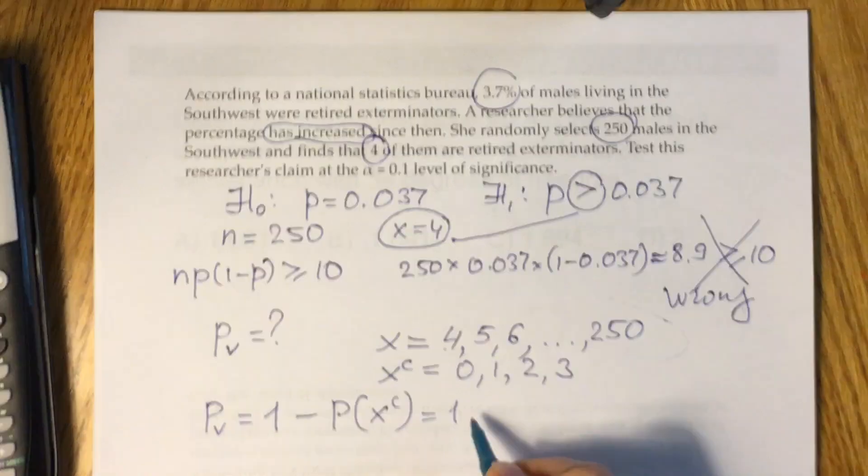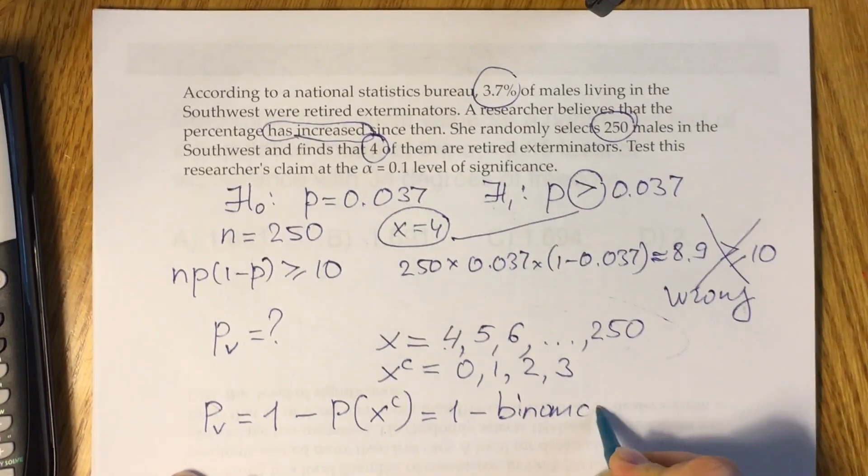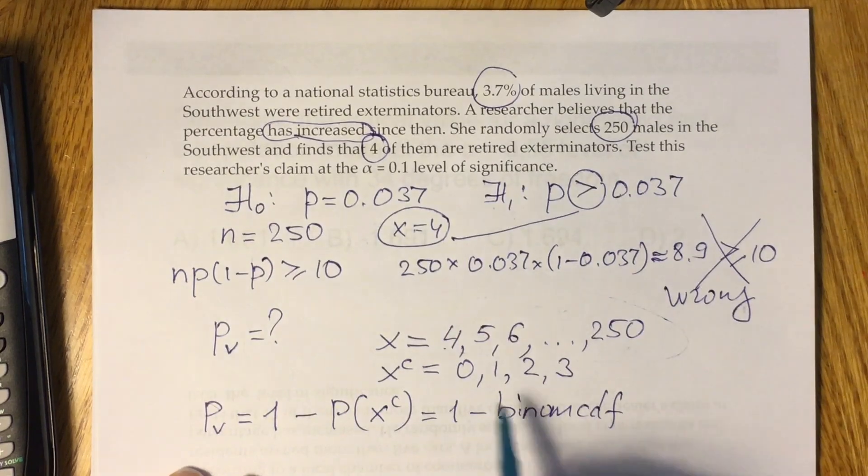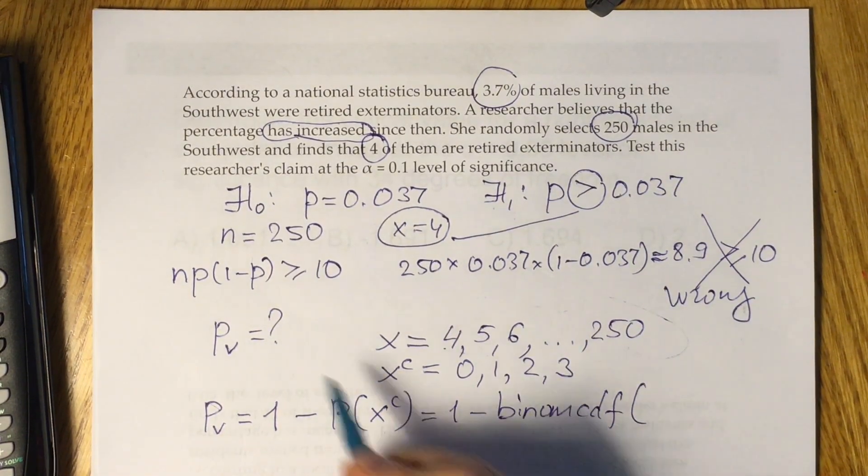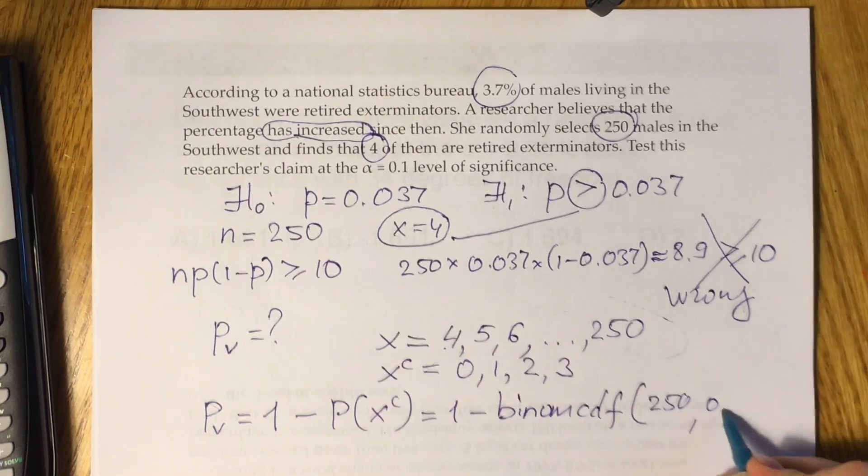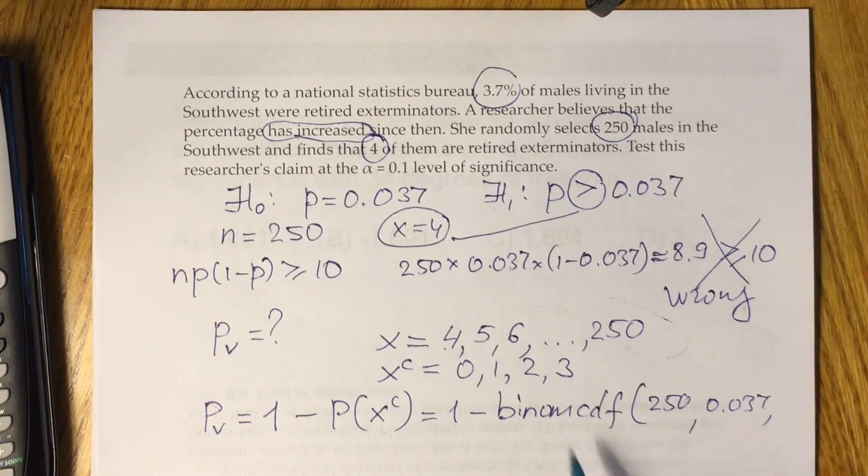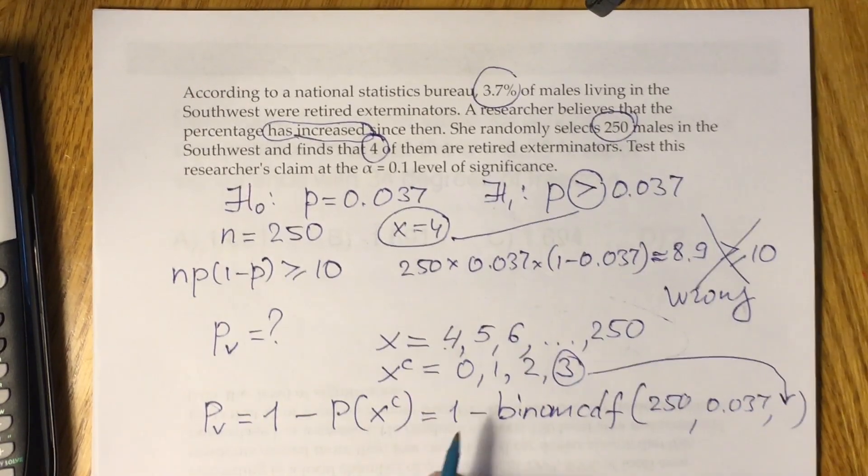And probability of the complement would be binomial probability distribution CDF, cumulative, because we have more than one value for x, in which you will put your n, 250. You will put your probability P, 0.037, and you will put biggest number in the sequence, which starts from 0, so 3.